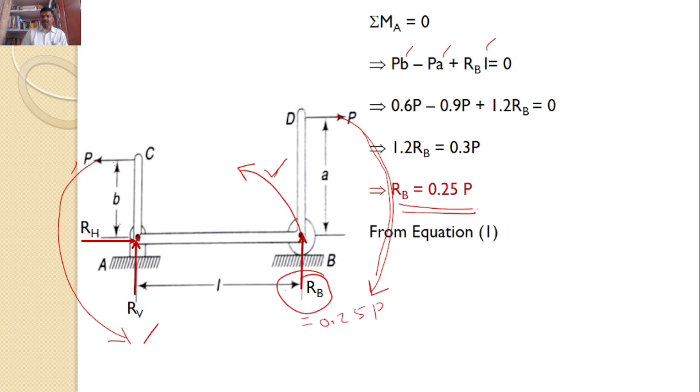Now from equation 1, we got RB plus RV equals 0. And I calculated RB equals 0.25P, so RV equals minus 0.25P. That means the initial assumed direction is wrong.